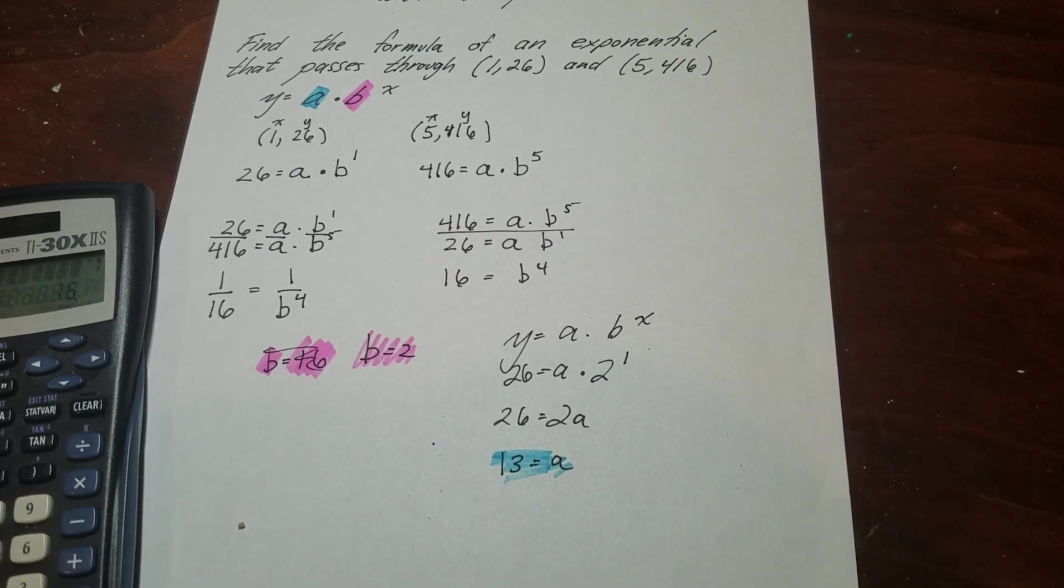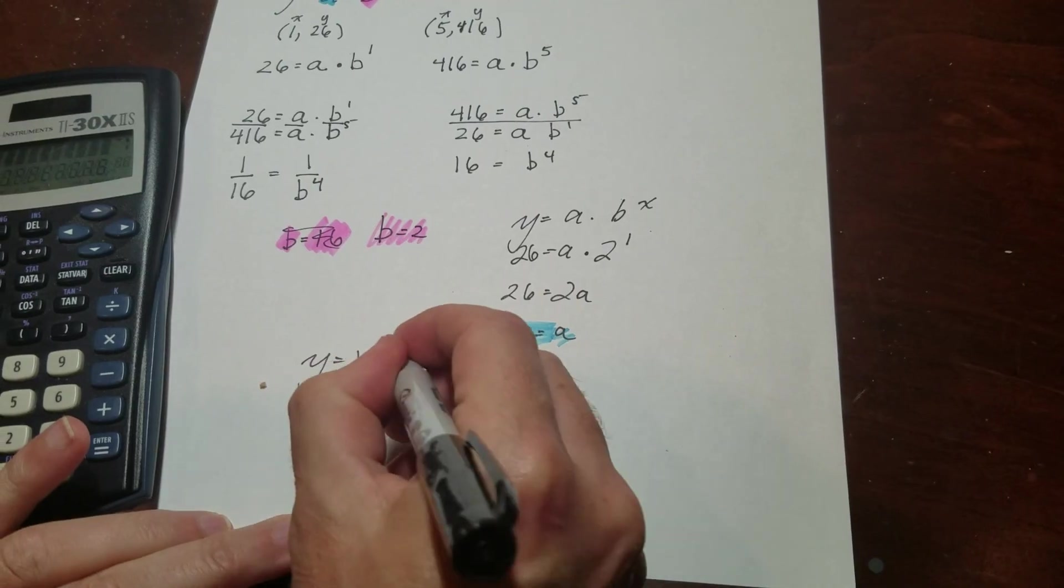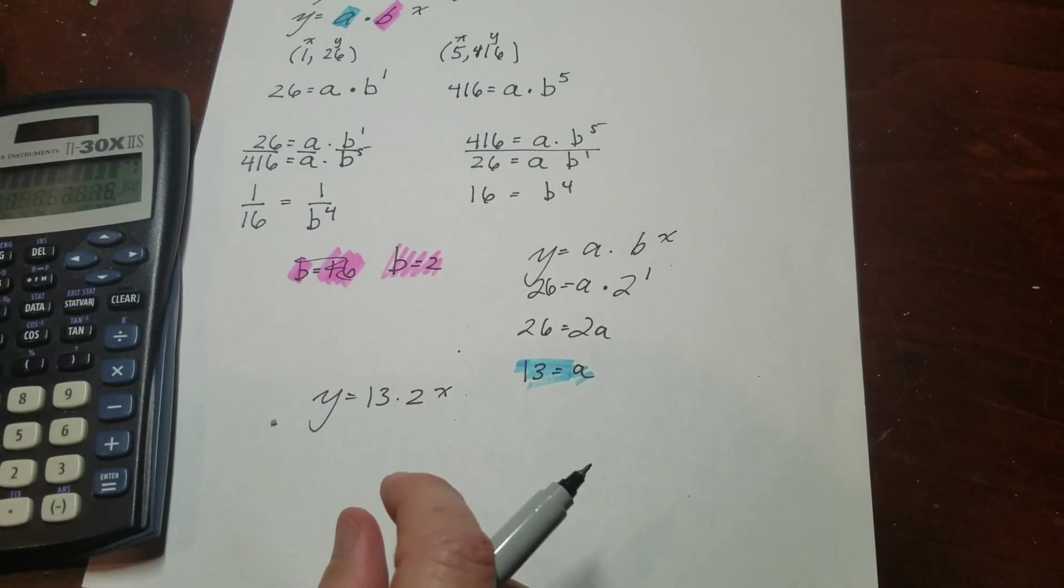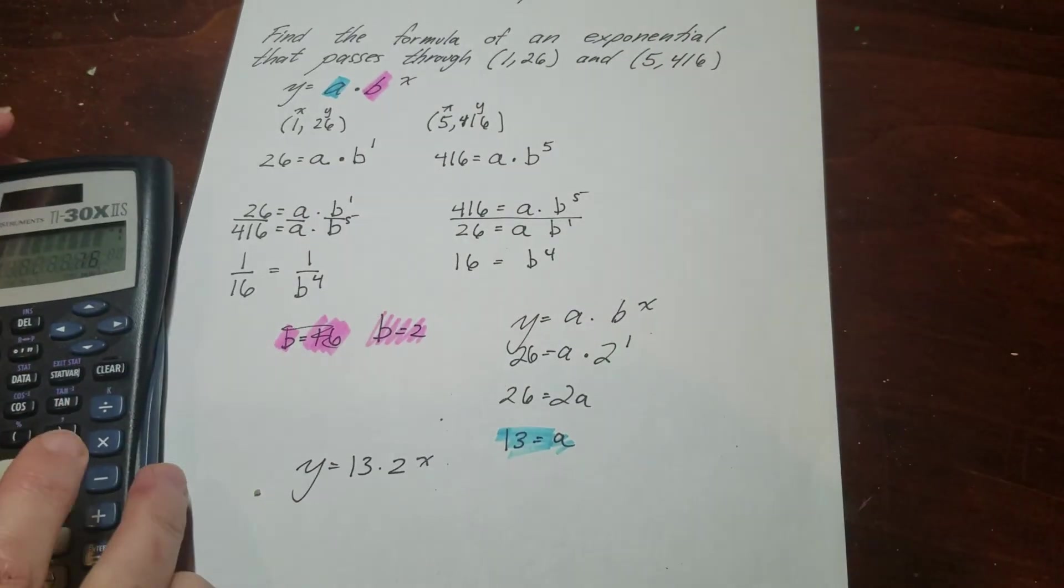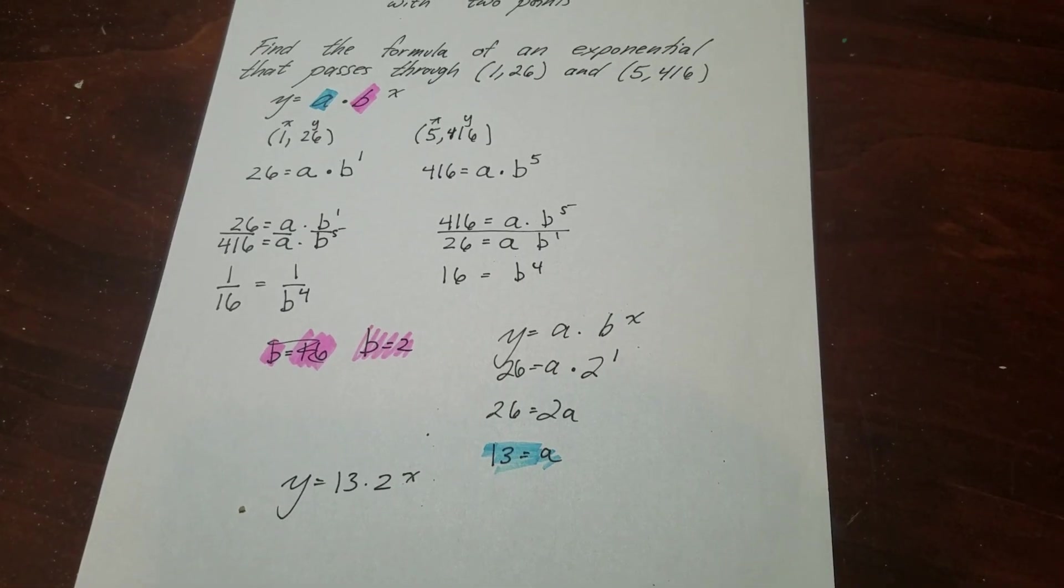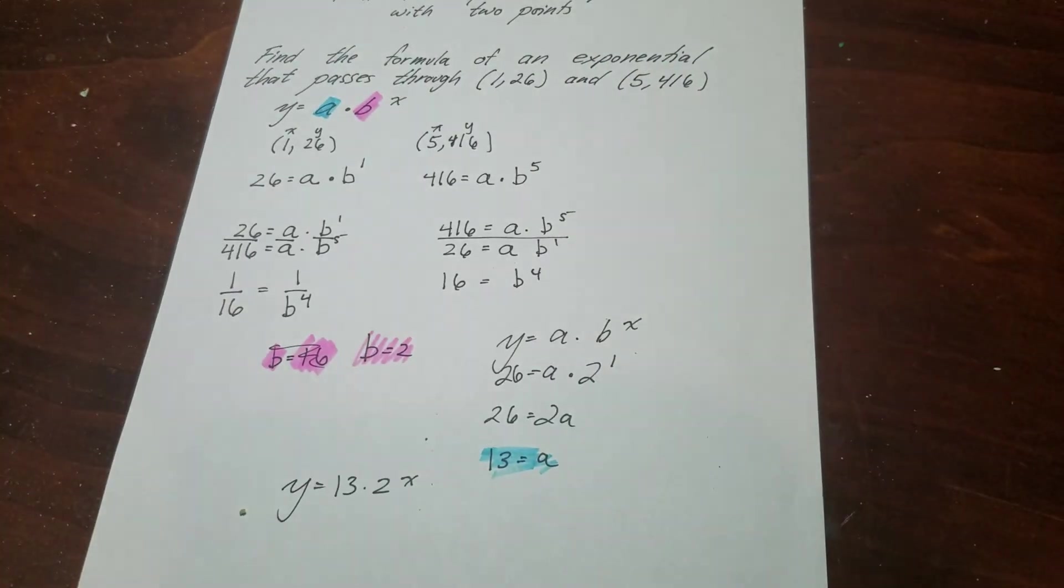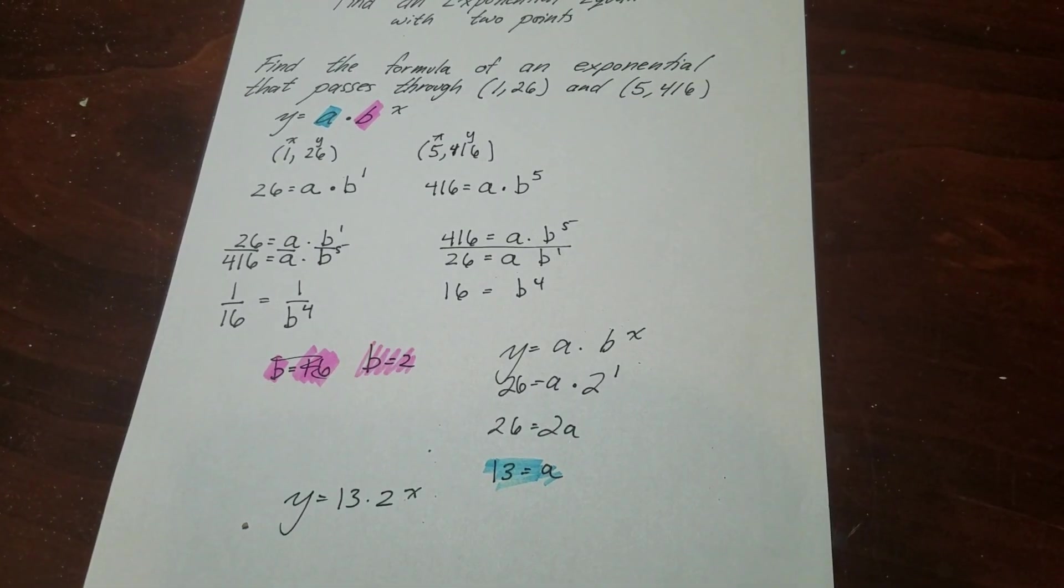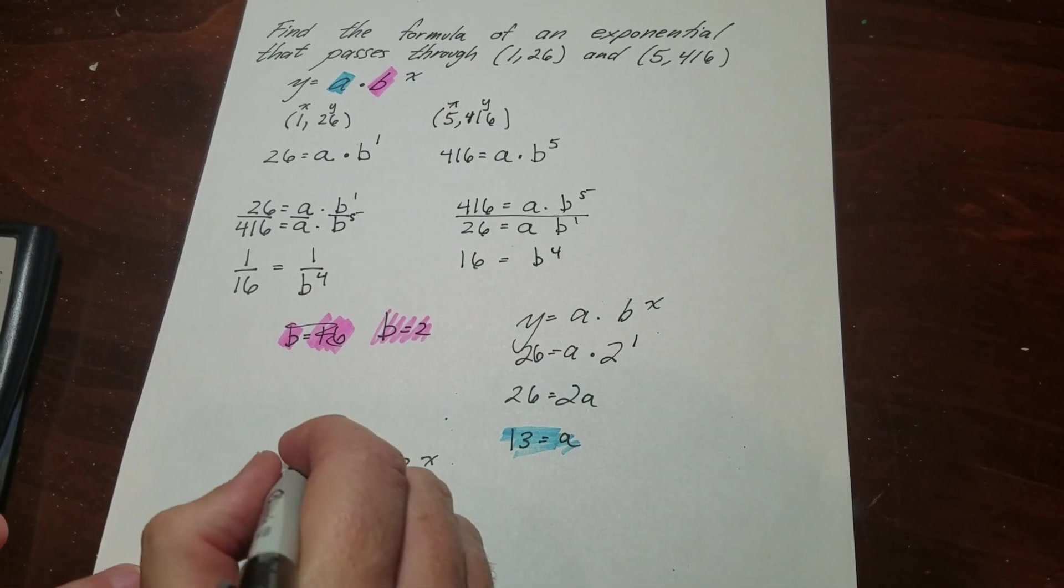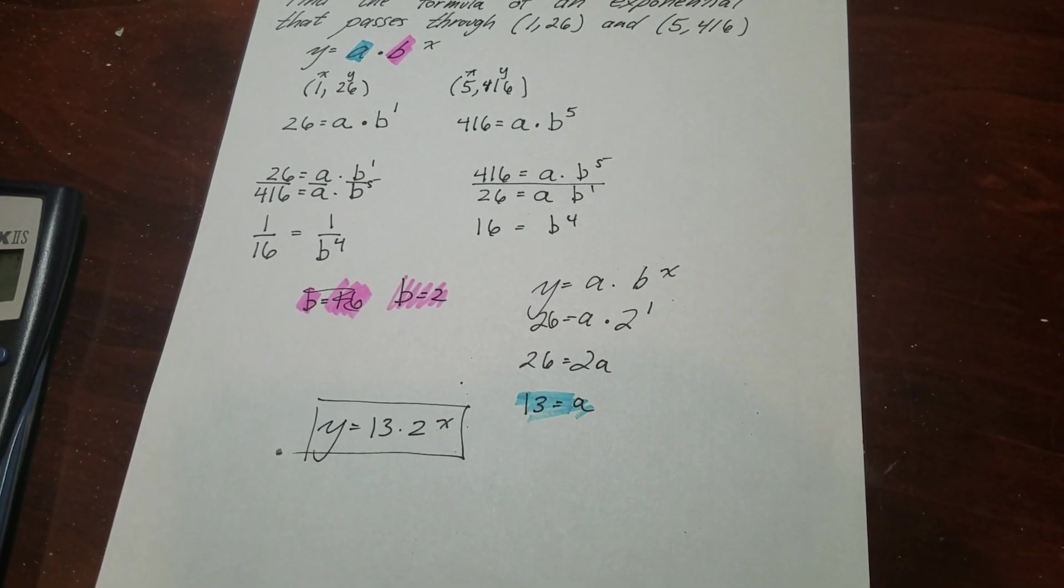So now I have my rule: y equals 13 times 2 to the x power. And as I always do when I make up rules, I always check it just to make sure. So I'm going to do that right now. So I'm going to do 13 times 2 to the 5th power, because that's my input, 2 to the 5th power. And I get 416, and that's what I was supposed to get, so I know that this is the rule. So it's quite simple. That's how you find an exponential equation with 2 points.